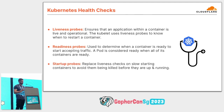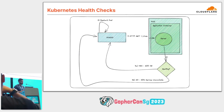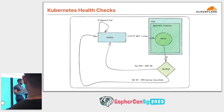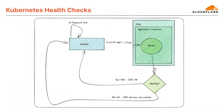Finally, we have startup probes, which replace the liveness checks on slow-starting containers to make sure they're not killed before they're up and running. From a high level, the kubelet — an agent running on each node — will check that the application is healthy by hitting a pre-configured endpoint. The application will reply with either a healthy response like a 200 status code, or an unhealthy response which would be anything over 399. In the case of a liveness endpoint, if we receive a certain number of failures, we'll kill the pod and restart it.